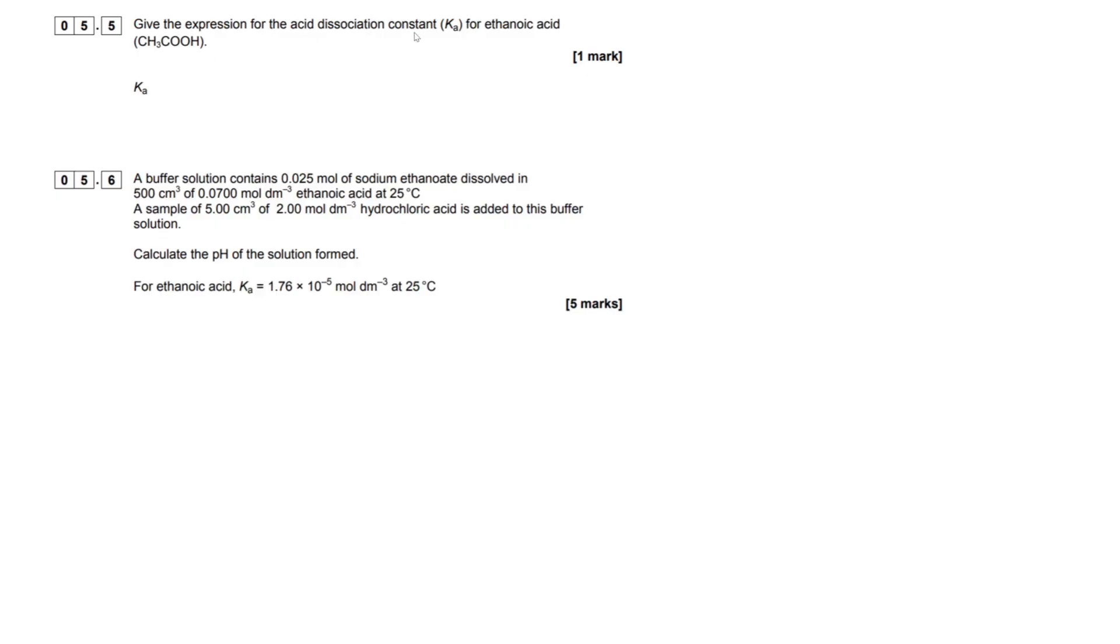Give the expression for the acid dissociation constant, Ka, for ethanoic acid. Super easy question, hopefully you guys are familiar with how to do this. So if we just write our equation here of ethanoic acid dissociation, equilibrium right here. We're going to lose a proton on this, and then we're going to have our proton here.